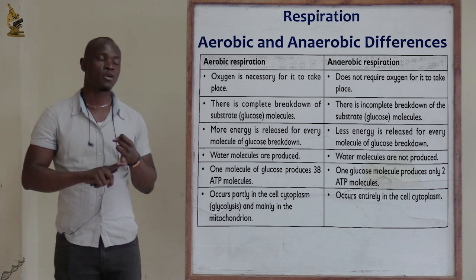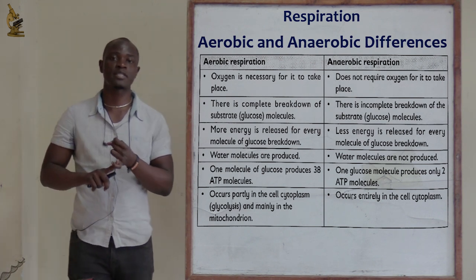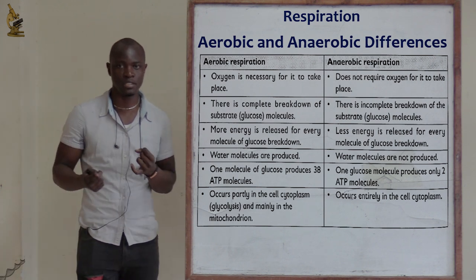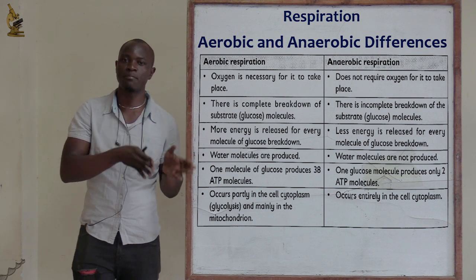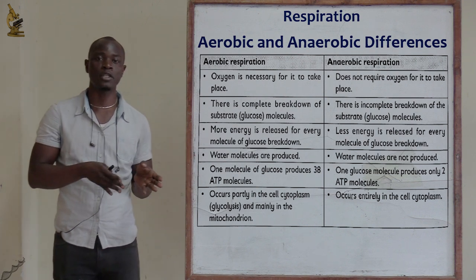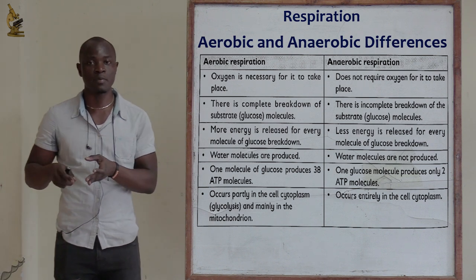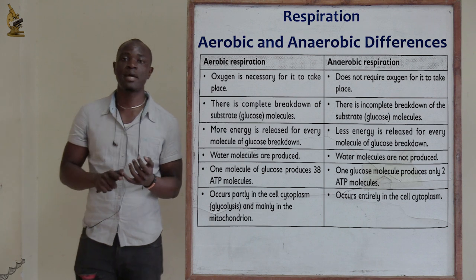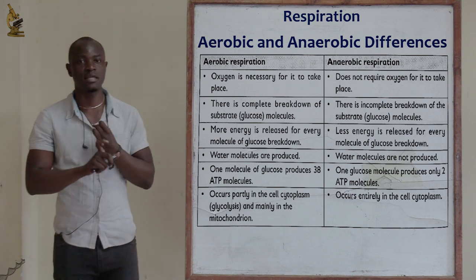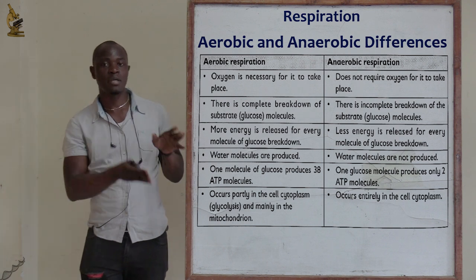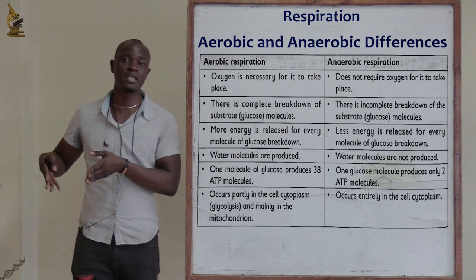In aerobic respiration, the food substrate is completely broken down using oxygen to form carbon dioxide, water, and energy. In anaerobic respiration, there is incomplete breakdown of the food substrate — in plants you get ethanol, and in animals you get lactic acid.